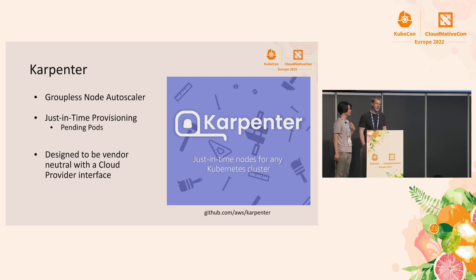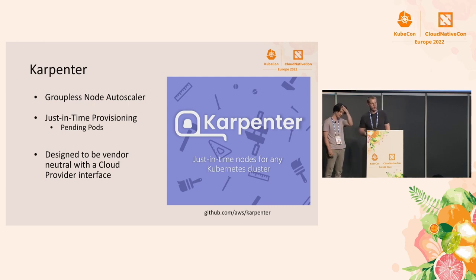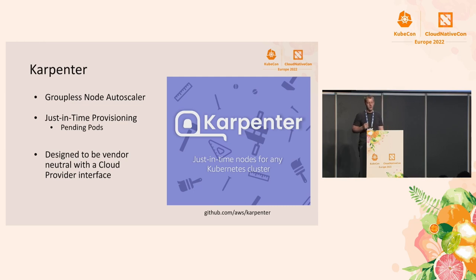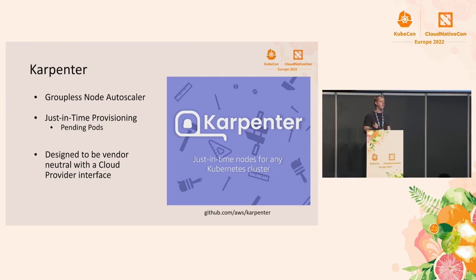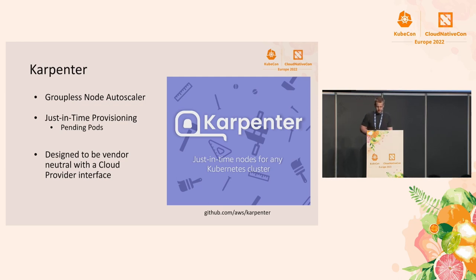That's why we decided to build Karpenter. Karpenter is a new node autoscaler for Kubernetes — it's a groupless node autoscaler. Cluster Autoscaler uses externally managed infrastructure like autoscaling groups that you increment desired capacity on. Karpenter is completely groupless and Kubernetes-native. We use a Provisioner CRD — our custom resource in Karpenter — to define configuration for scaling out your nodes. Karpenter does just-in-time provisioning: it looks at pending pods that are unschedulable by kube-scheduler to know when to scale up. Karpenter is designed to be completely vendor neutral; currently we only have the AWS cloud provider, but we're hoping to add more.